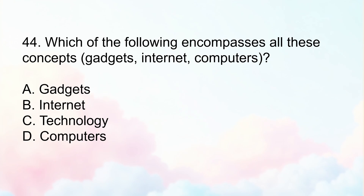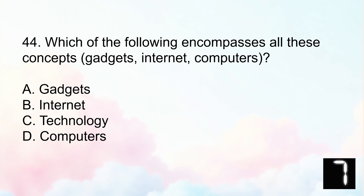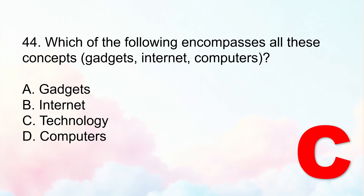Number 44: Which of the following encompasses all these concepts: gadgets, internet, and computers? Letter A, gadgets. Letter B, internet. Letter C, technology. Or Letter D, computers. The correct answer is Letter C, technology. Technology is the broadest term that includes gadgets, the internet, computers, digital tools, software, and systems used to solve problems or enhance productivity and learning. A gadget is a subcategory of technology like phones or tablets. The internet is a tool or network, not the umbrella concept. A computer is just one form of technology and not inclusive of all.